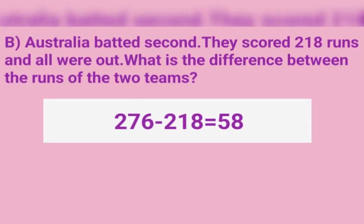Answer B: Australia batted second. They scored 218 runs and all were out. The difference between the runs of the two teams: 276 − 218 = 58.